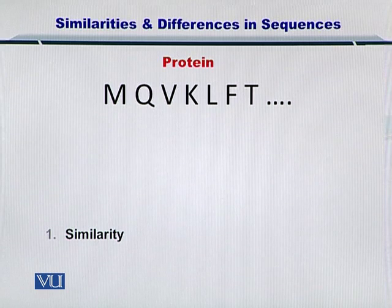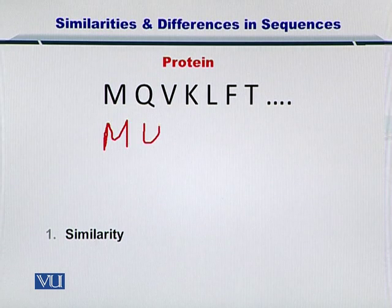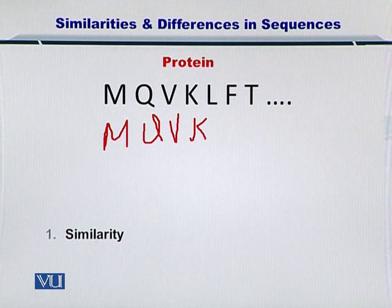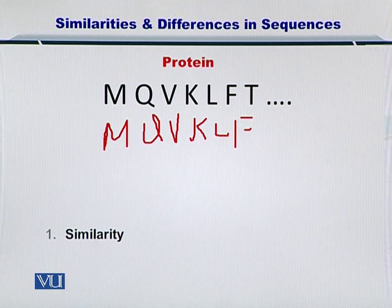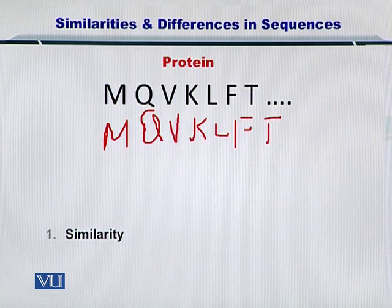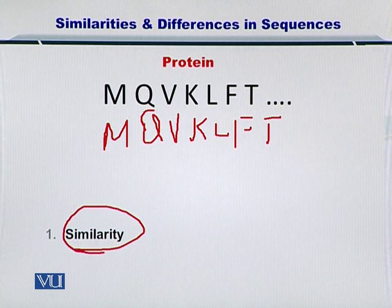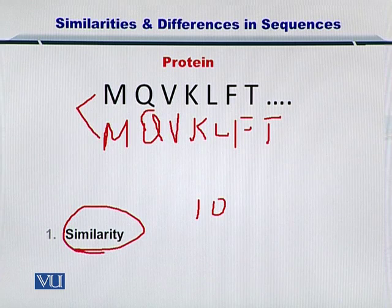So if you have another protein sequence — let's say M, Q, V, A, L, F, and T — then you can obviously say that in terms of similarity, these two sequences are 100% similar.